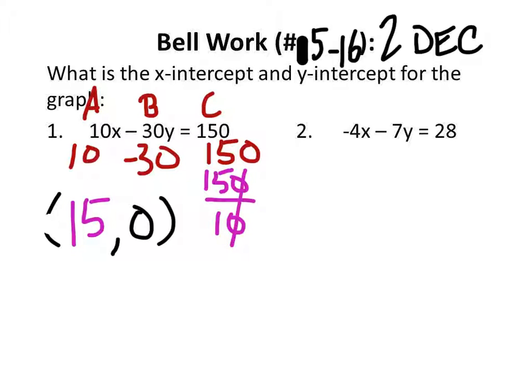B is not 0, it's negative 30. It has a 0, but there's a 3 in front of it. Now what we need is the y-intercept, so the x value is 0. Notice with the y-intercept, all we're going to do is take the c value divided by b, because it's on the poster. So it's 150 divided by negative 30. Zeros cross, it's negative 5.